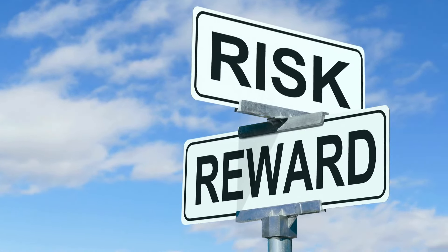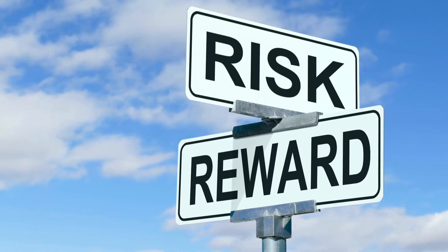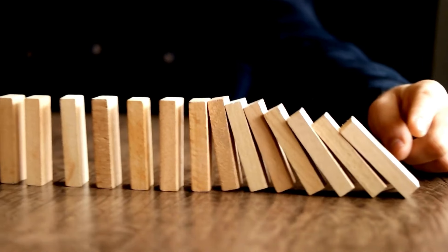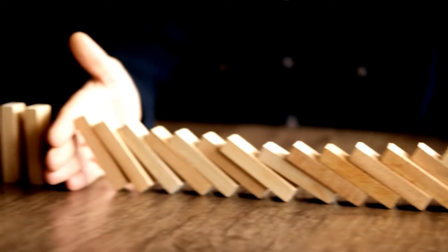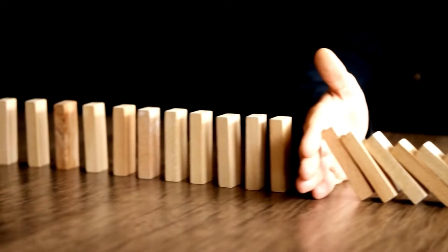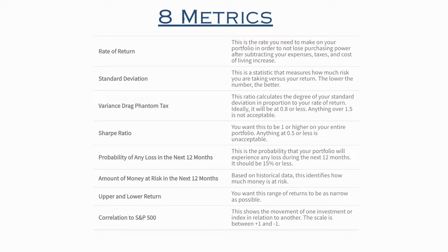When you're thinking about standard deviation, think about that as risk. The higher the risk, the greater the volatility is on the portfolio. So I created this other term called variance drag phantom tax. Variance drag phantom tax is simply that equation: what is your standard deviation in relationship to your rate of return? Anything over one and a half is not acceptable. We'll get back to that in a moment because I'm going to show you a couple of examples.